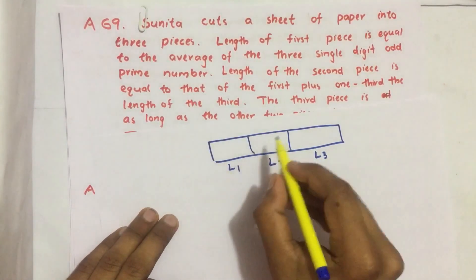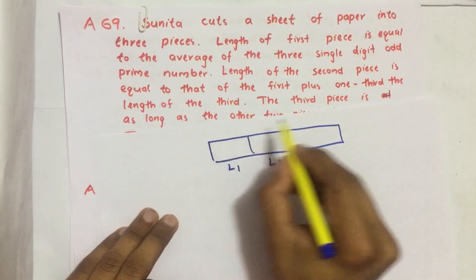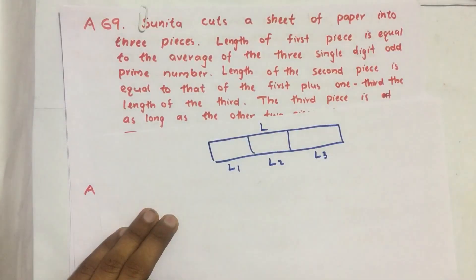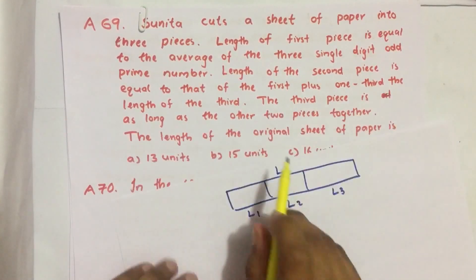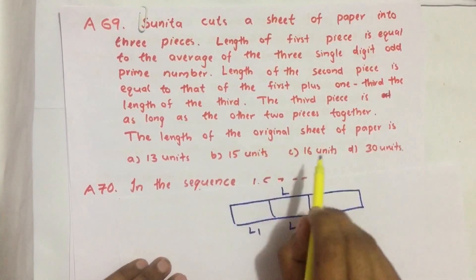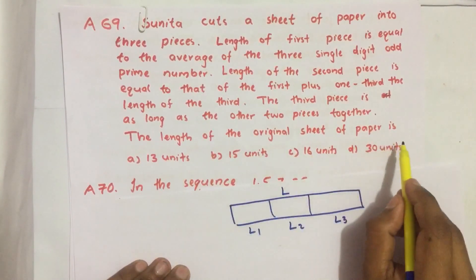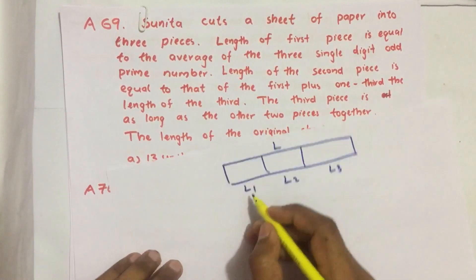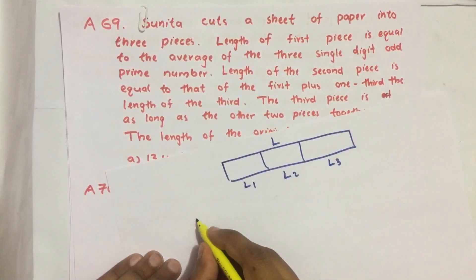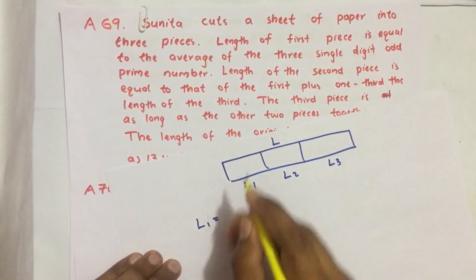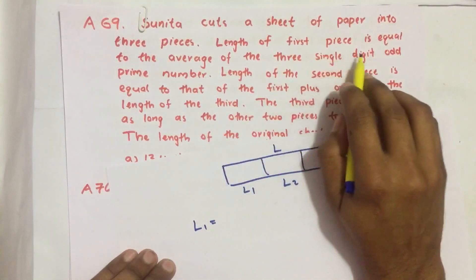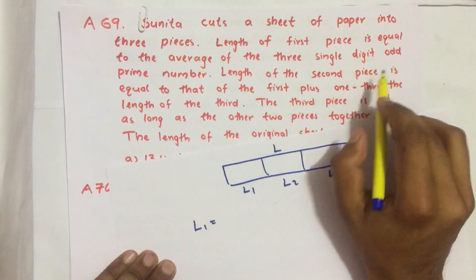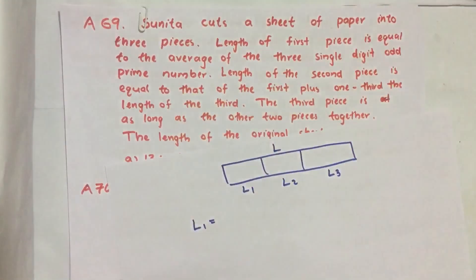The total length is L, and it is asked to find the length of the original sheet of paper. The first condition states that L1, the length of the first piece, is equal to the average of the three single digit odd prime numbers.